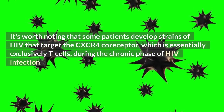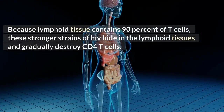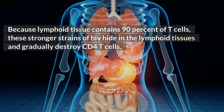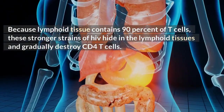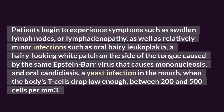Because lymphoid tissue contains 90 percent of T cells, these stronger strains of HIV hide in the lymphoid tissues and gradually destroy CD4 T cells. Patients begin to experience symptoms such as swollen lymph nodes, or lymphadenopathy, as well as relatively minor infections such as oral hairy leukoplakia — a hairy-looking white patch on the side of the tongue — and oral candidiasis, a yeast infection in the mouth, when the body's T cells drop between 200 and 500 cells per mm³.